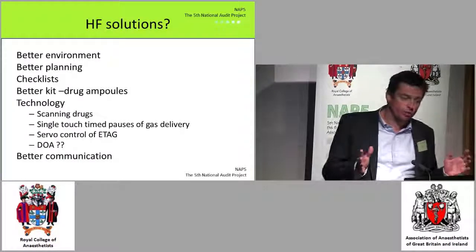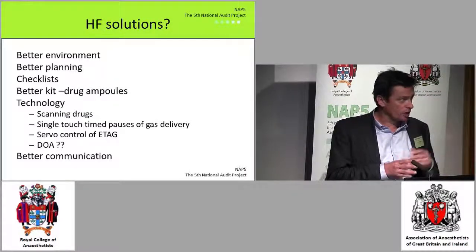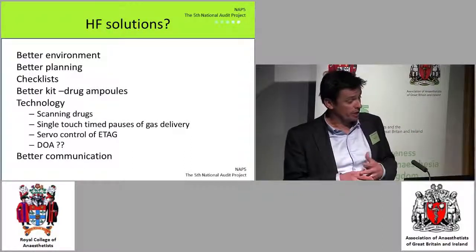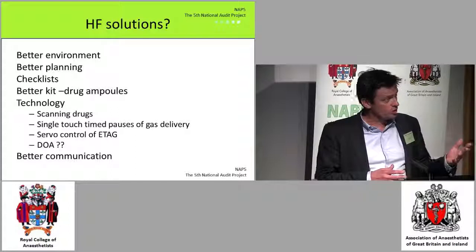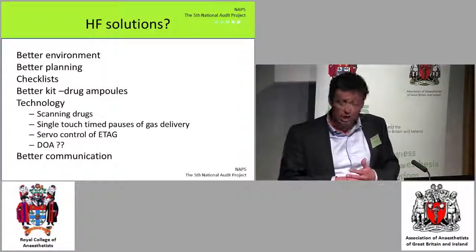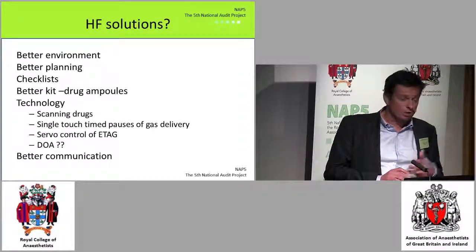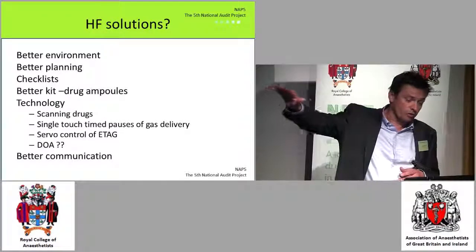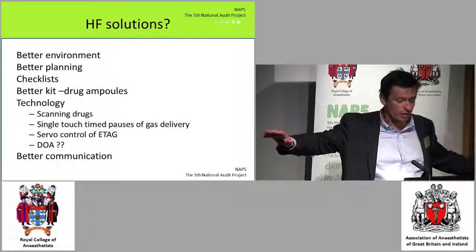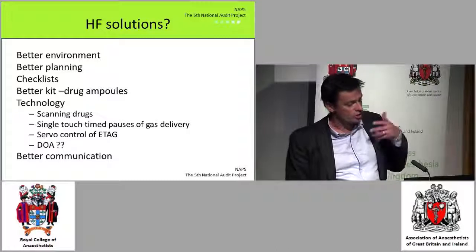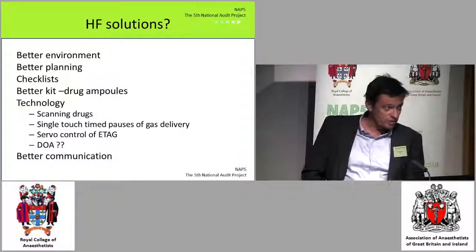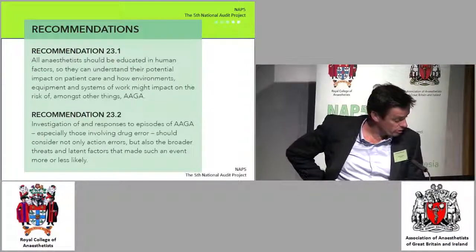Any human factor solutions? Can we create a better environment to work in? Can we say we need time to draw up drugs and won't be rushed? Can we as individuals and departments plan better? Does the checklist have a role? Should we demand that we're not given ampoules of drugs that are almost indistinguishable but do very different things? Can we embrace technology — scanning drugs, new machines that servo-control anaesthetic agent levels so you dial in 0.7 MAC and it's delivered regardless? And what about depth of anaesthesia monitoring and better communication? All things to consider.